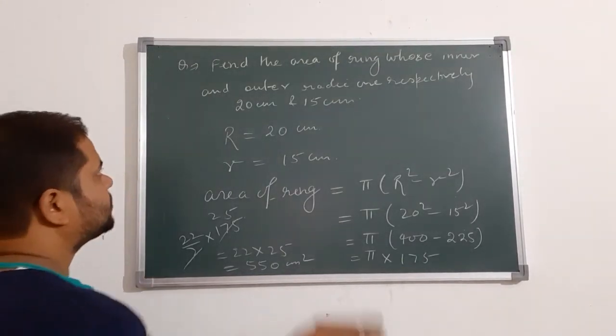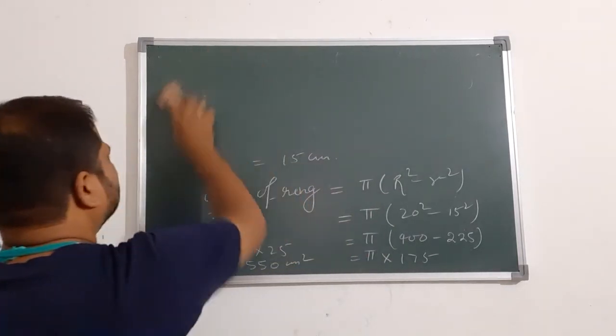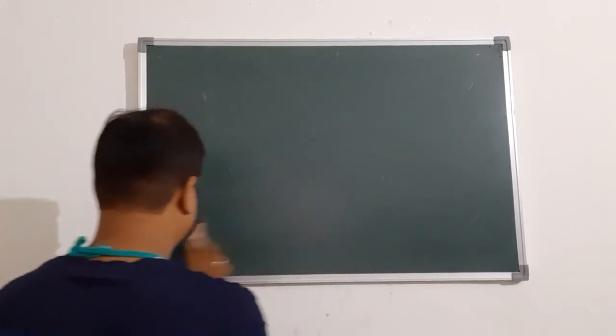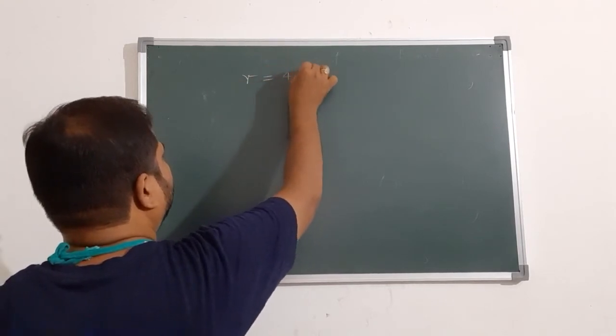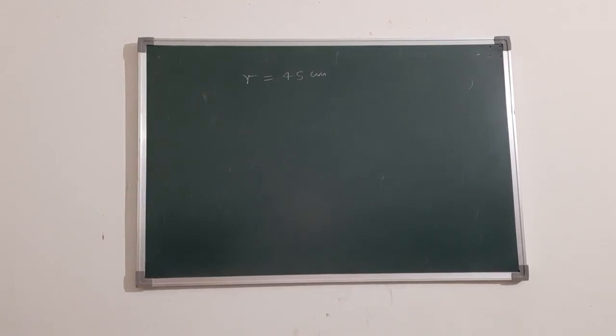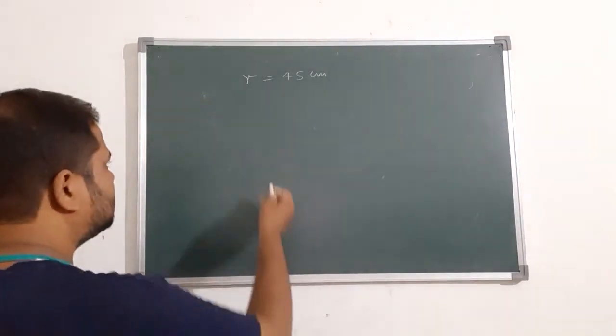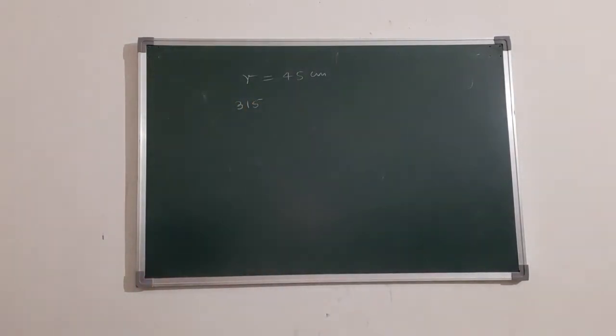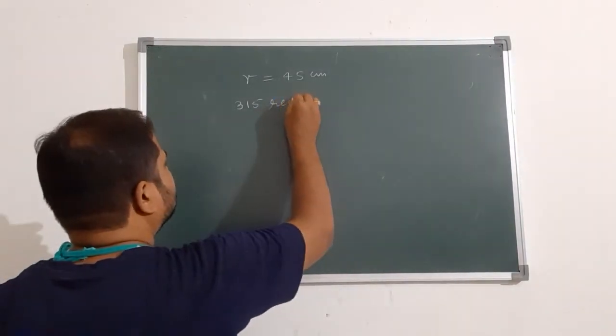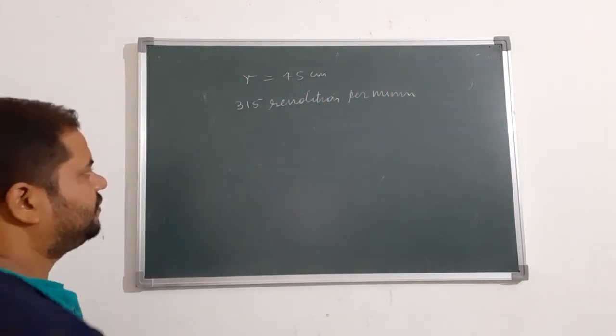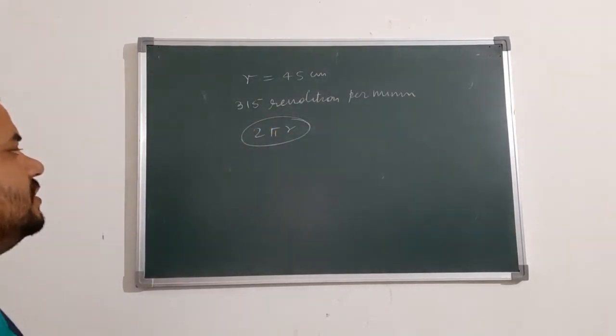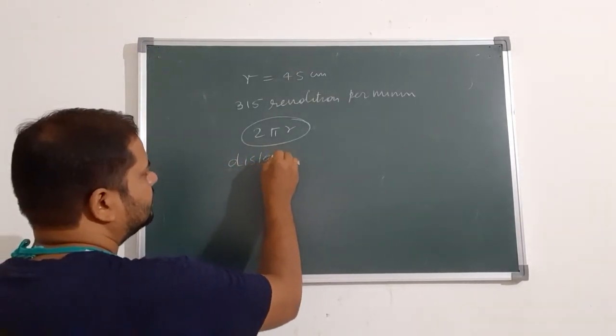So see next one, next question. The radius of a wheel of a bus is 45 cm and determine the speed km per hour when its wheel makes 350 revolutions per minute. What is the revolution? 350 revolutions per minute.